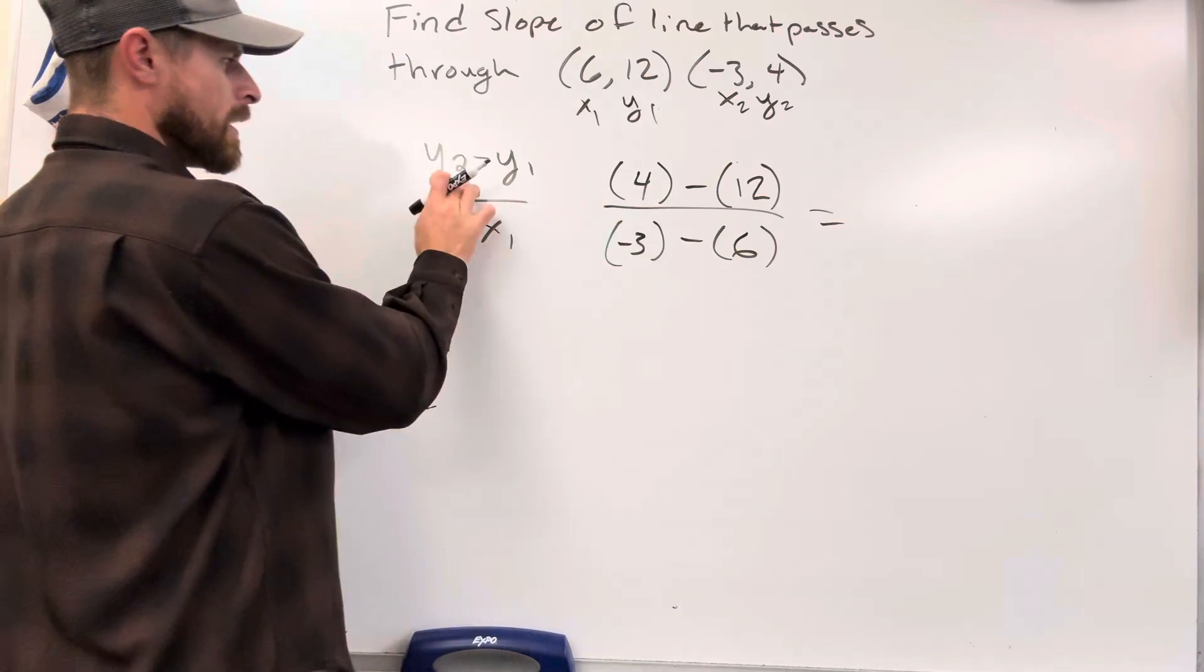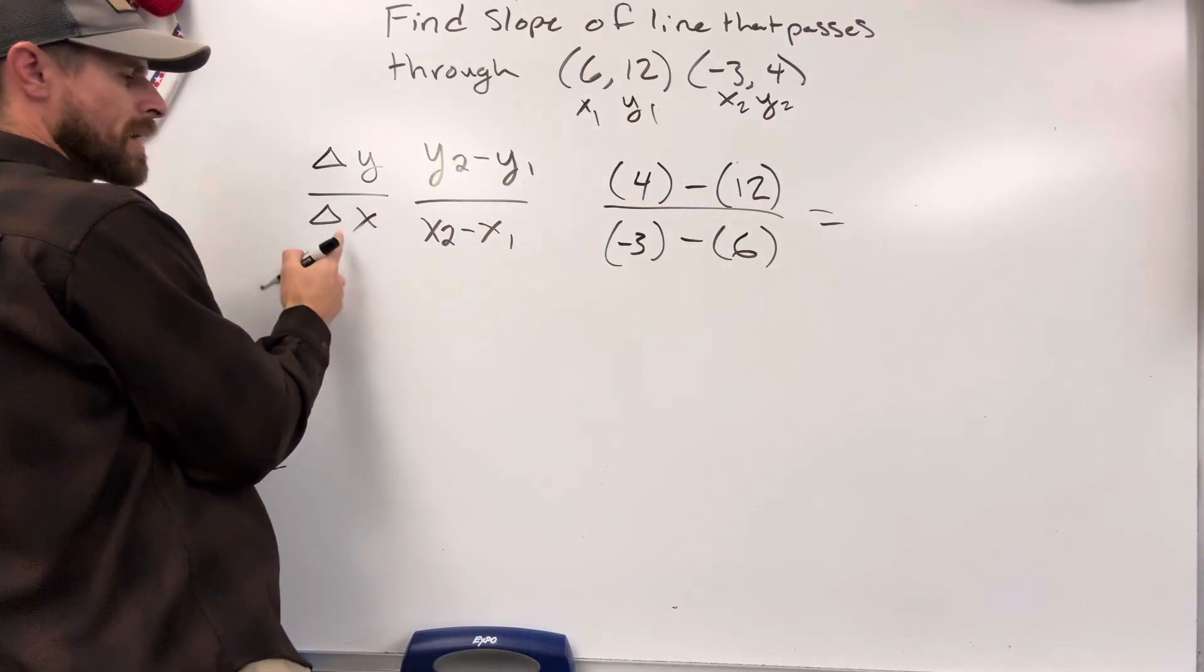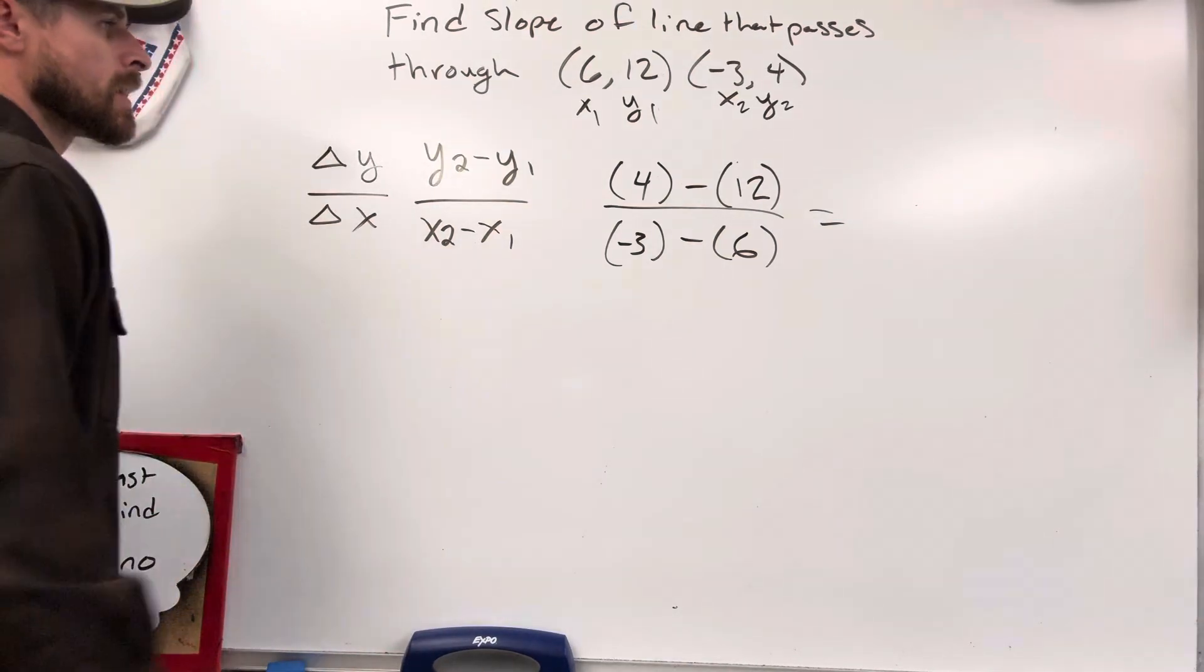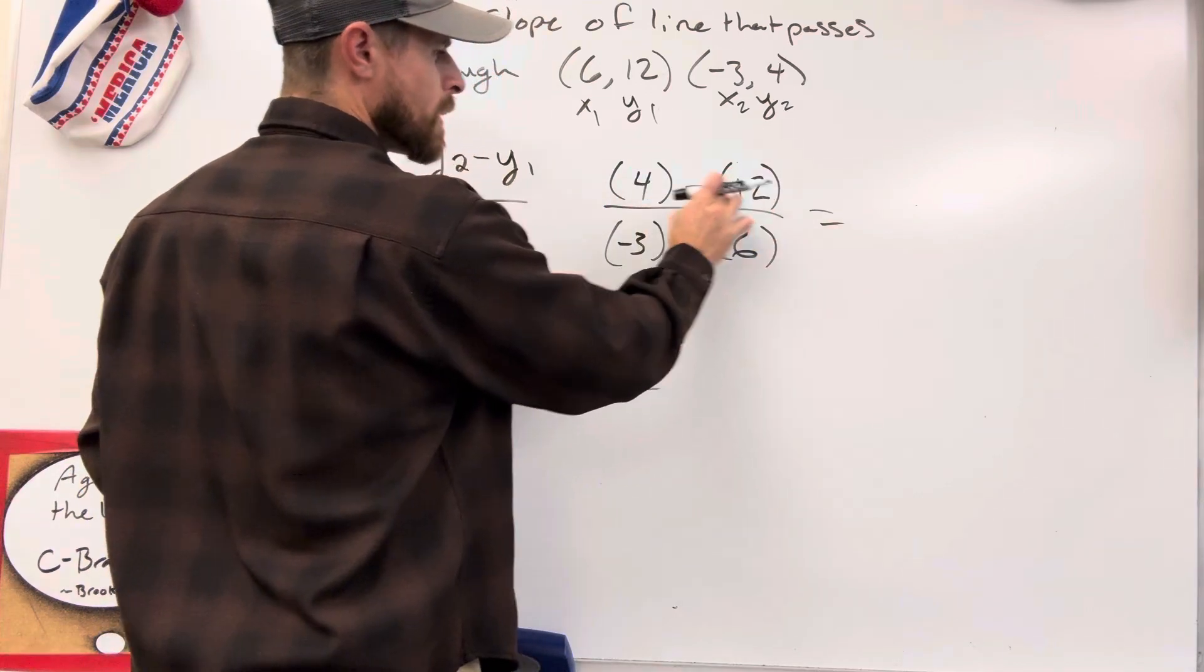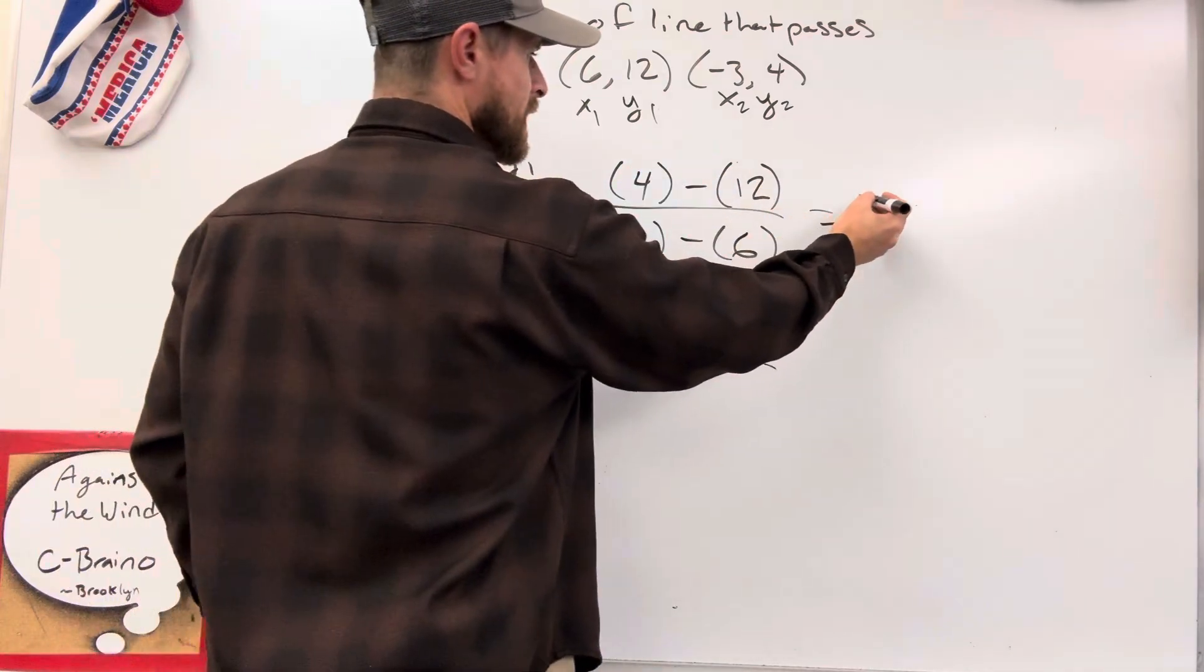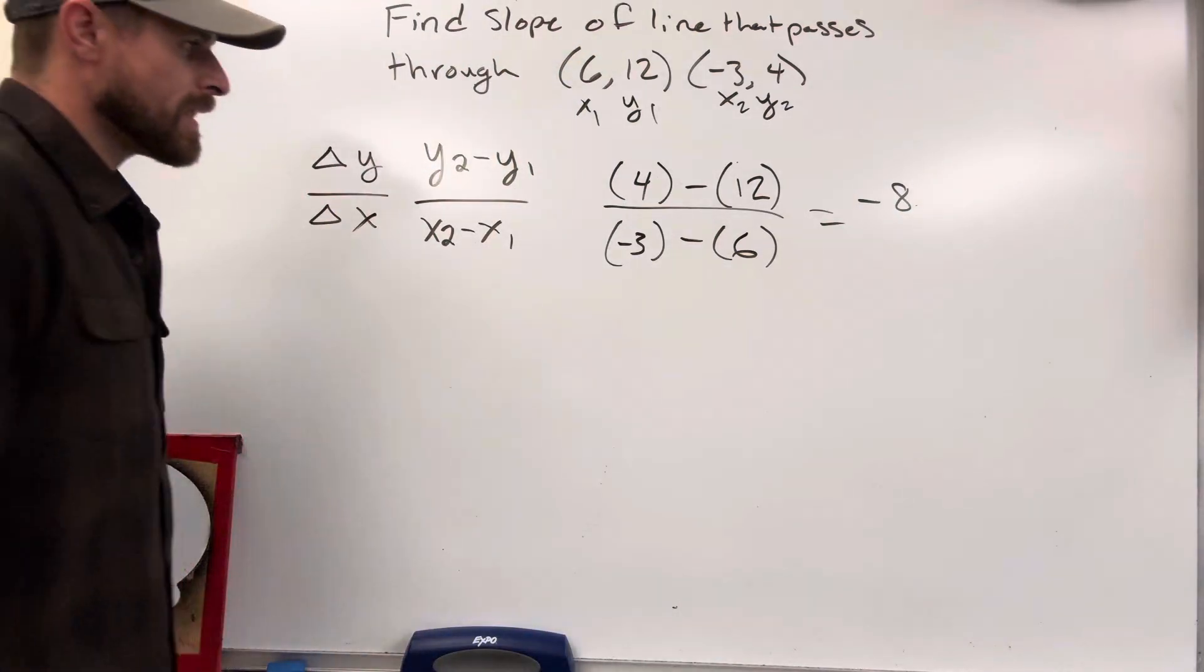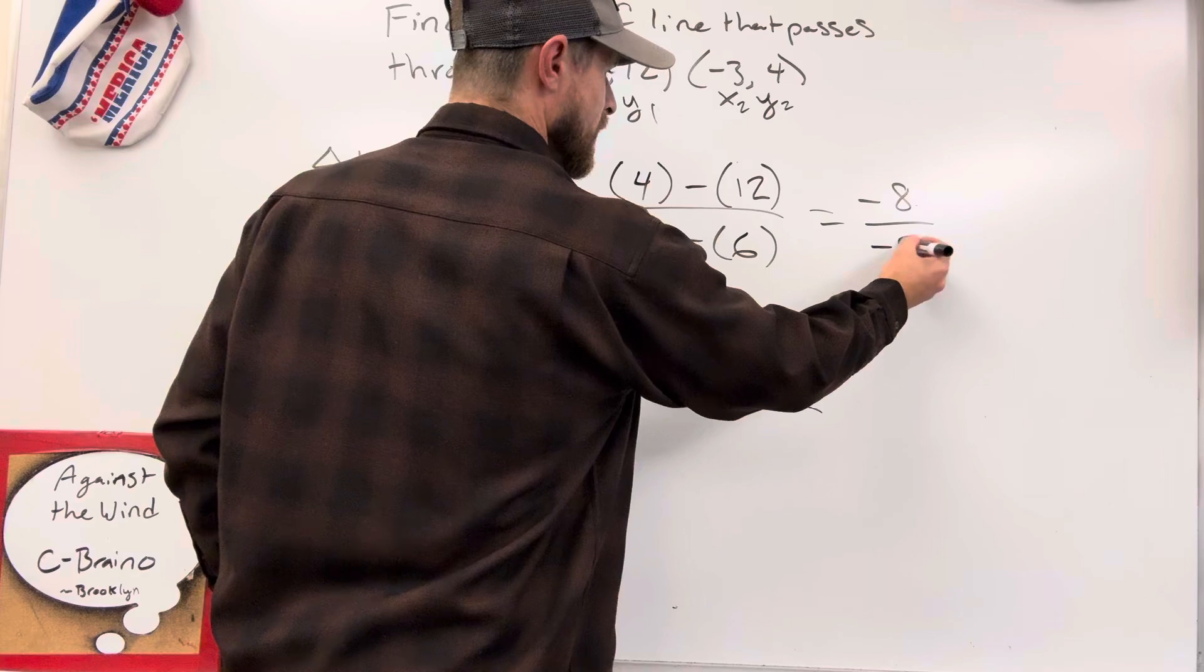It's your change in y over your change in x. And we're going to talk about that in the other strategy, which is much quicker, in my opinion. Okay, 4 minus 12. What's 4 minus 12? You're taking away more than you have, so you're actually going to end up at negative 8. Negative 8 for that one. And then negative 3 minus 6, that takes you way back into negative 9.